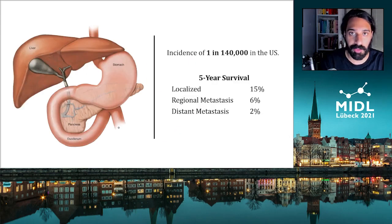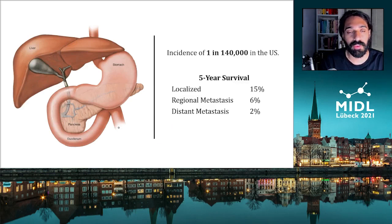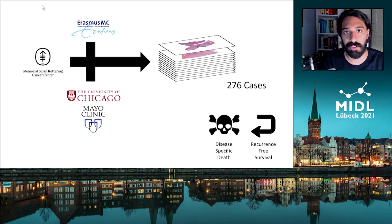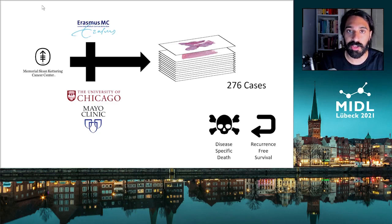The dataset that we use then is the same dataset we use now. Intrahepatic cholangiocarcinoma is a rare cancer — it has an incidence rate of 1 in 140,000 in the U.S. and also has very low survival outcome. Our dataset, built from three institutions, most of it coming from Memorial Sloan Cancer Center, is one of the largest histopathology datasets of intrahepatic cholangiocarcinoma, barely even touching 300 slides.